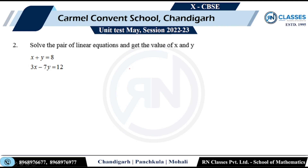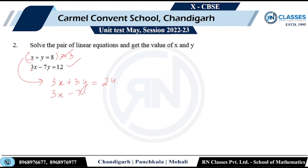Question two: solve the pair of linear equations for x and y. Using the elimination method — I'll make the coefficients of x the same. The coefficient of x in the first equation is 1, so multiply it by 3: this gives 3x + 3y = 24. The second equation remains 3x − 7y = 12.